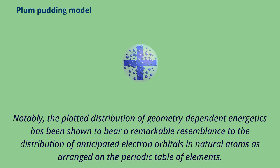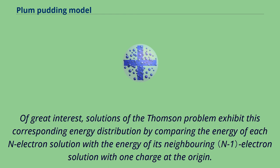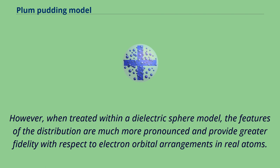Of great interest, solutions of the Thomson problem exhibit this corresponding energy distribution by comparing the energy of each n-electron solution with the energy of its neighboring electron solution with one charge at the origin. However, when treated within a dielectric sphere model, the features of the distribution are much more pronounced and provide greater fidelity with respect to electron orbital arrangements in real atoms.